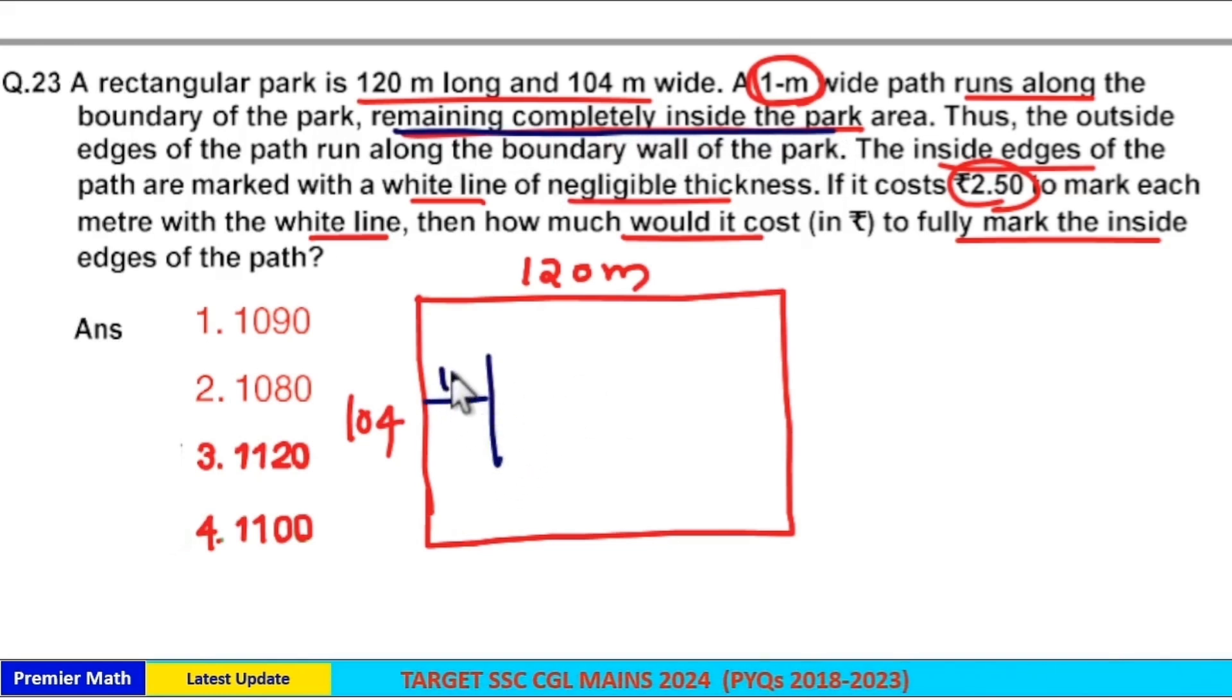So, this path width is 1 meter means this is the inside edges of the path, and this outer rectangle is the outside edges of the path. Now, this is also 1 meter.